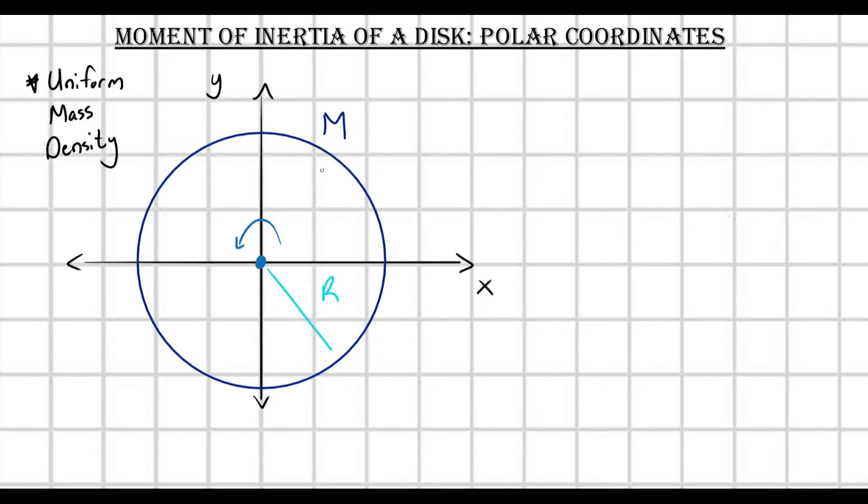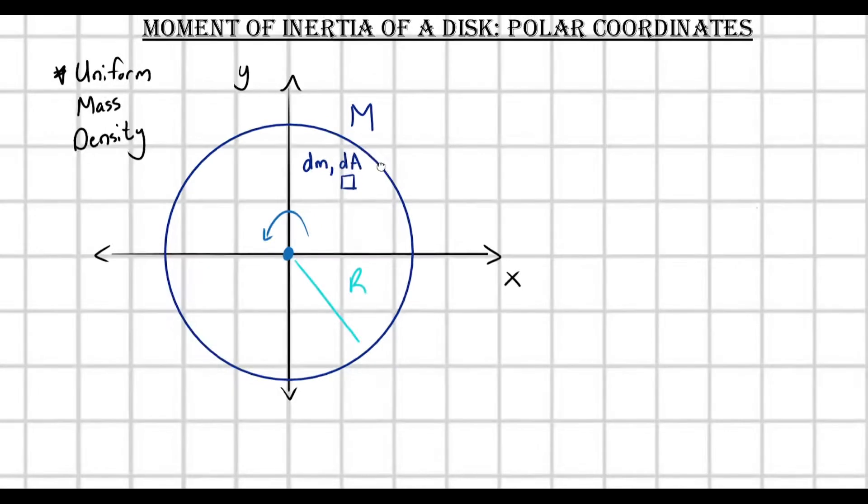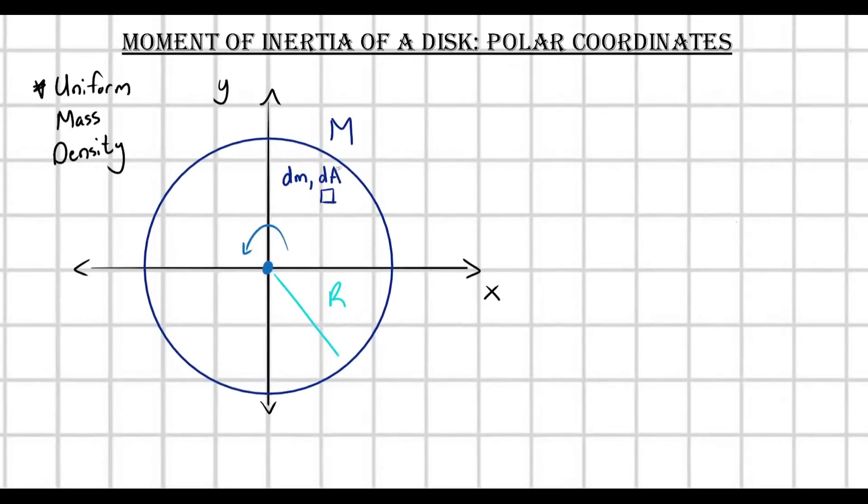In order to calculate this moment of inertia, first, we can break our little disk into a bunch of little infinitesimal mass units. Each of these is going to have some dm, and it's going to occupy some infinitesimal area, dA. And we'll look into the nature of this little infinitesimal area element shortly. But we know that each of these little mass units, they're going to have some distance, and I'll call this distance gamma. This is going to have some distance gamma from our axis of rotation.